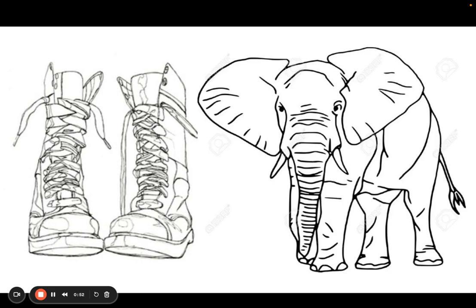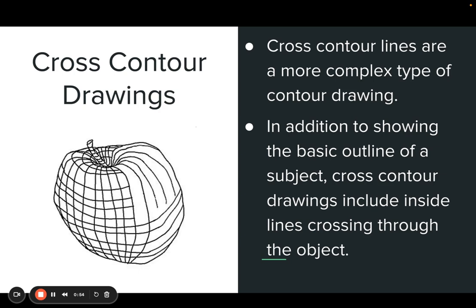Cross contour builds on that. It's a more complex type of contour drawing. In addition to showing the basic outline of a subject, cross contour drawings include inside lines crossing through the object.